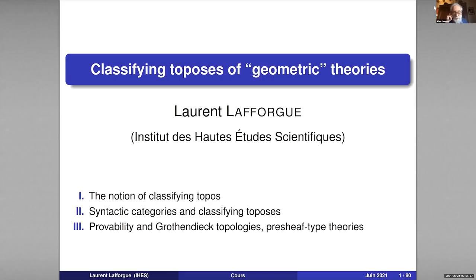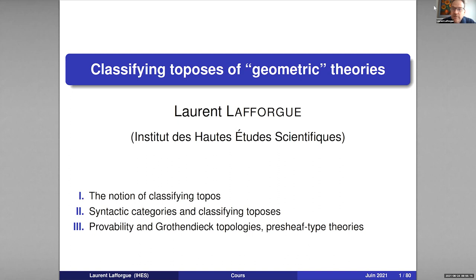I am going to review some basic results on toposes. The notion of topos was introduced by Grothendieck in the late 1950s or around 1960, and they were first introduced as generalized categories of sheaves on so-called sites, which means categories endowed with a topology. But it was discovered a little later that toposes can also be presented in a very different way, as classifying objects for first-order theories in the sense of logic.